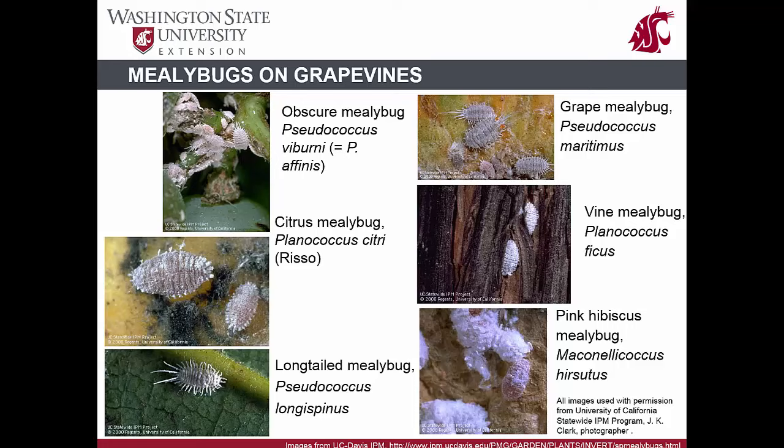Several species of mealybugs are being implicated in the spread of viruses associated with leaf roll disease. In California, for example, seven different mealybug species have been reported as potential vectors of different leaf roll-associated viruses. In addition to the six shown, Gil's mealybug (Pseudococcus gilli) has recently been identified as a potential vector, and more are likely to be added as our ability to test for vectoring improves.